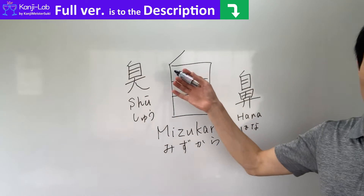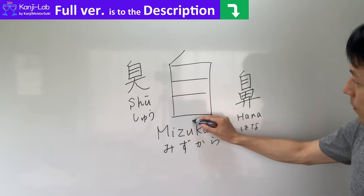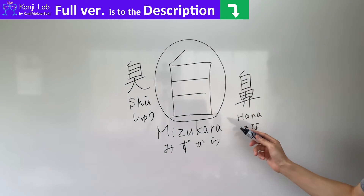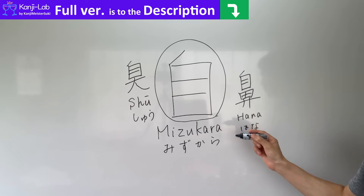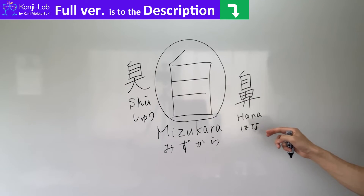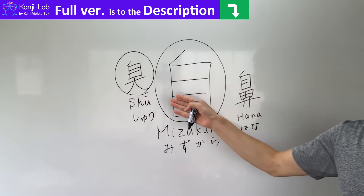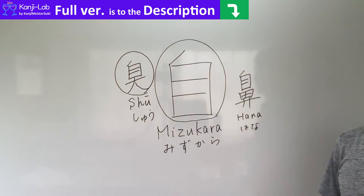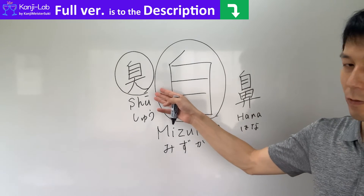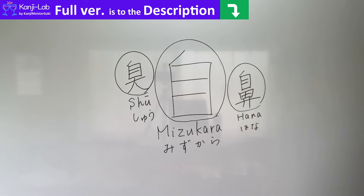Smells are formed. These are kanji characters using this radical. First, MIZUKARA wa JIJI. Next, SHUU. SHUU wa KUSAI wa NIOU — it means bad smell. HANA wa BI — it means nose.